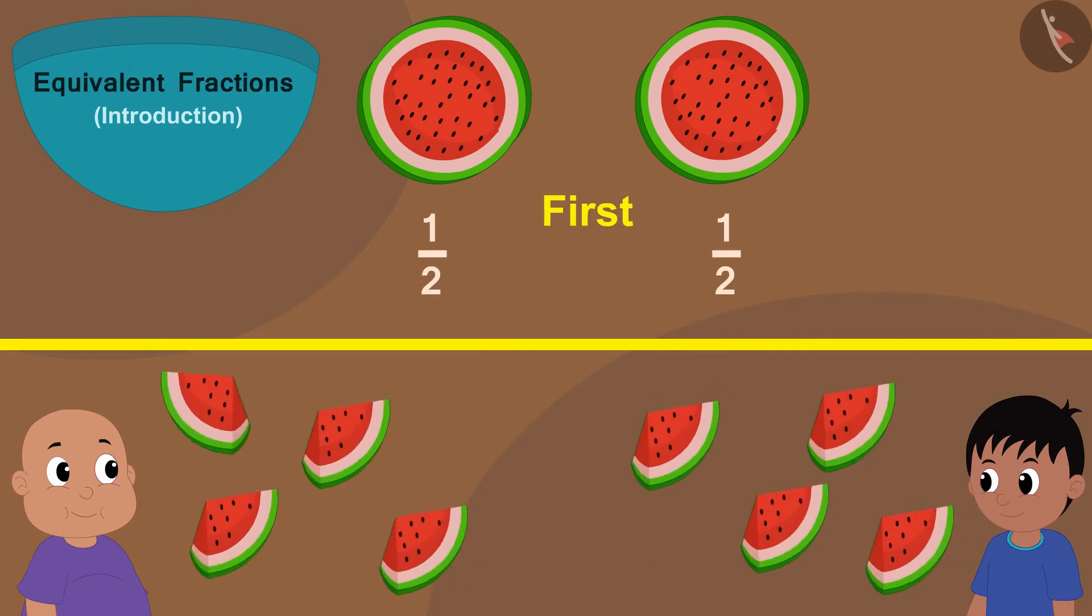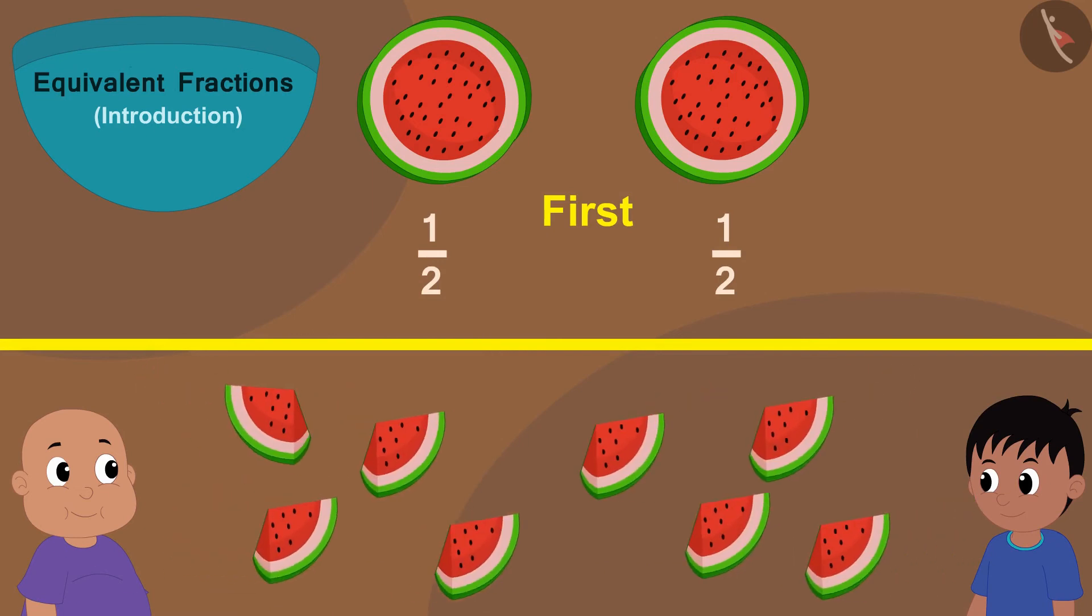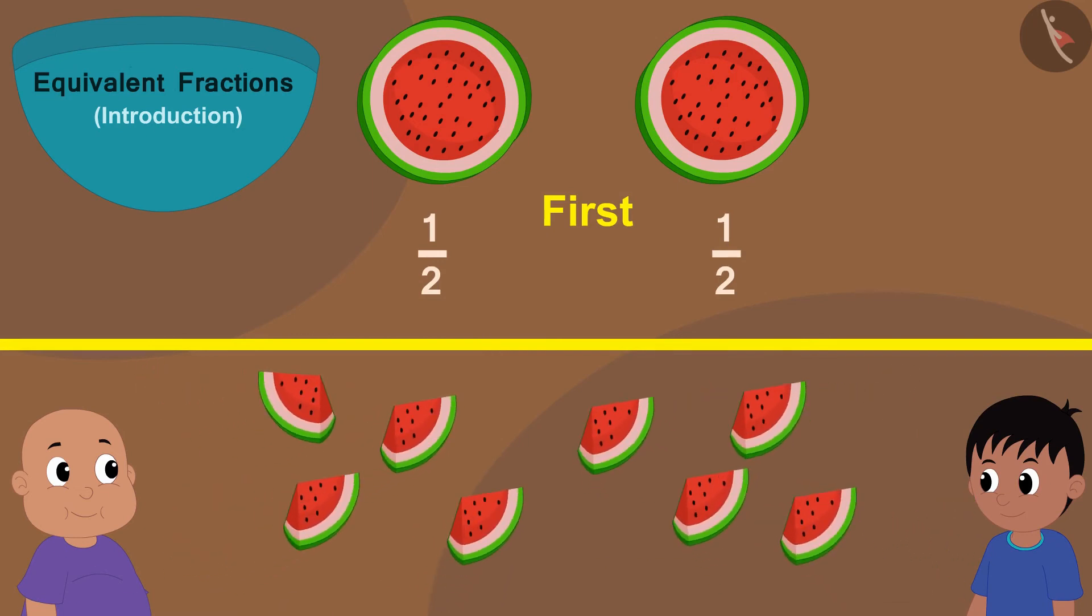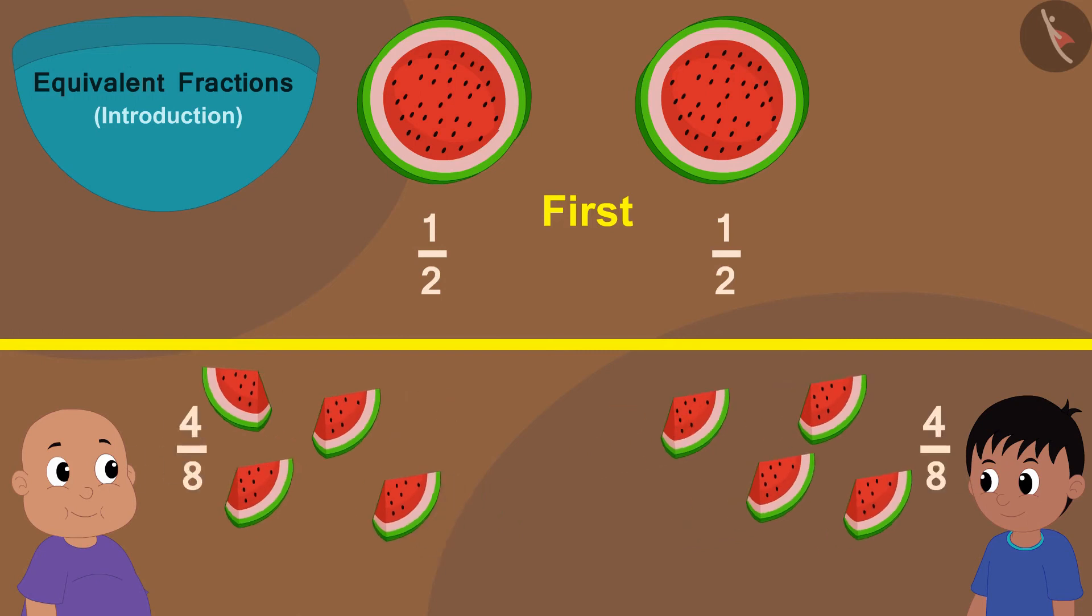Yes! Now, both will get four four parts, that is, four parts out of eight. We can write the fraction of the watermelon given to Raju or Bablu in this way as four by eight. Because both are getting four parts out of the total eight parts.